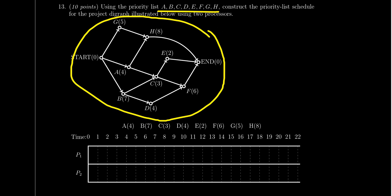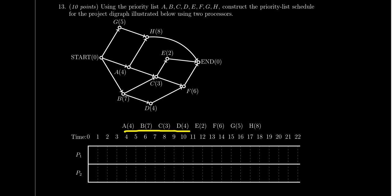Using this priority list, we have to construct the schedule of events using two processors on this project. For convenience, the priority list is also listed down here. At the start of the project, we're looking at the graph. G would be ready, so is A, so is B.